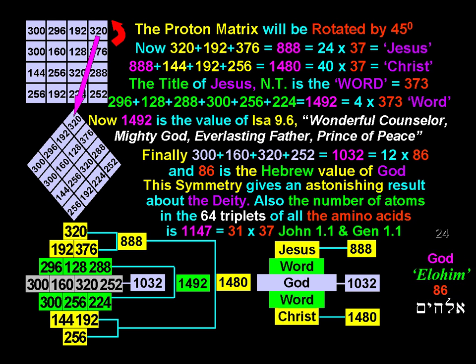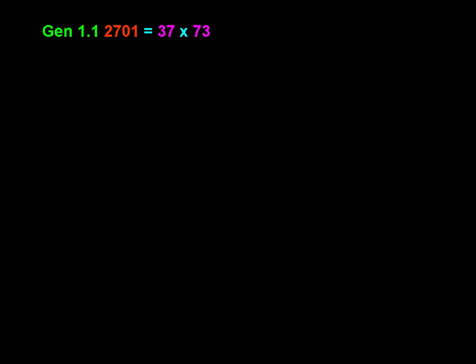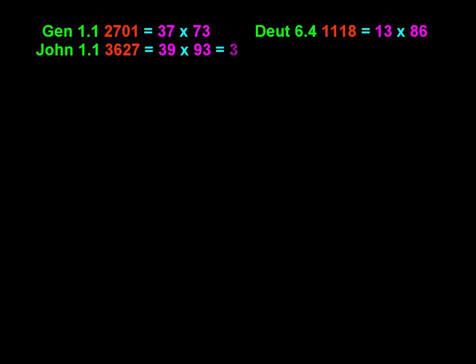These values are direct factors of John 1 verse 1 and Genesis 1 verse 1. Genesis 1 verse 1: 2,701 is 37 by 73. Deuteronomy 6 verse 4: 1,118 is 13 by 86. John 1 verse 1: 3,627 is 39 by 93, and is also 3 by 13 by 31 by 3.